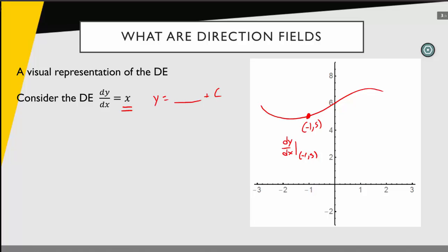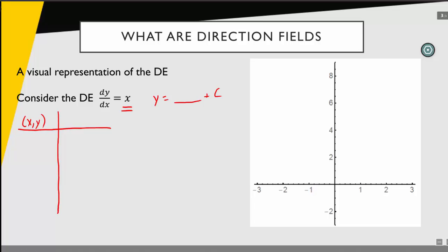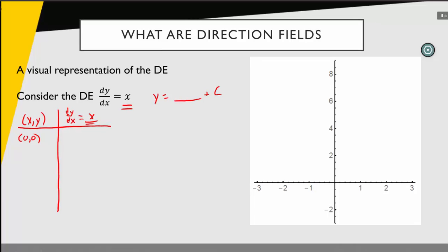To organize our work I'll build a table with the points I'm going to sample and the corresponding slope of the tangent line — that's the derivative evaluated at each point. For this differential equation that's going to be represented by x. Let's start at the origin, (0, 0). Plugging x=0 and y=0 into the right-hand side, I get a slope of 0. So a little segment of that tangent line is a horizontal segment.